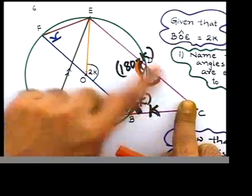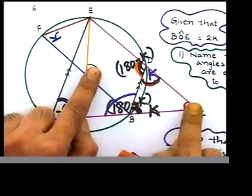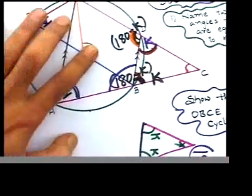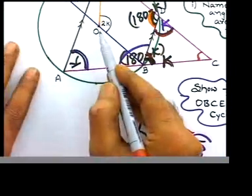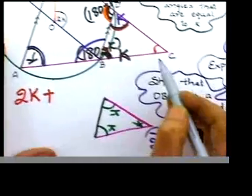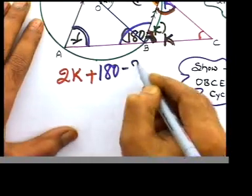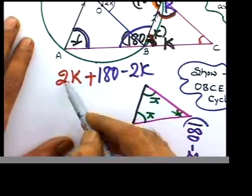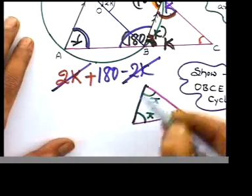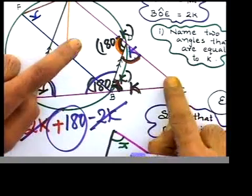O is a 2k. What is C? We just found C. We just wrote C as 180 minus 2k. So let's just add those two. Angle O was 2k, you are adding that to angle C. Angle C was 180 minus 2k, so 180 minus 2k. What is happening to 2k? The 2k minus 2k, they get cancelled, become 0. You're left with 180.